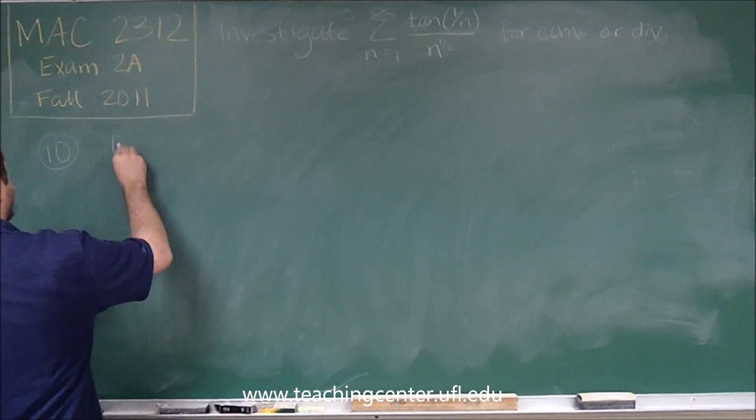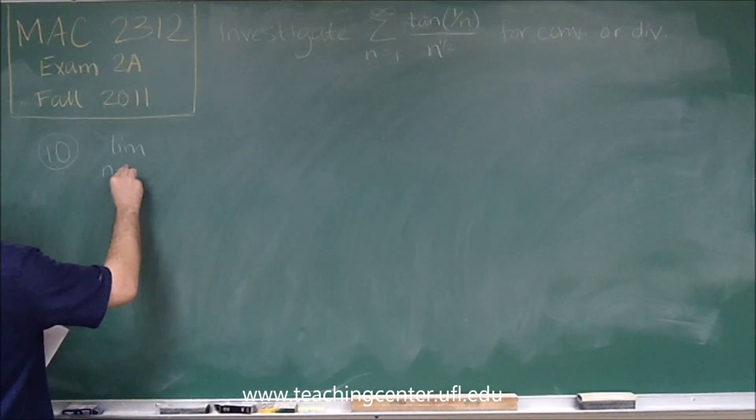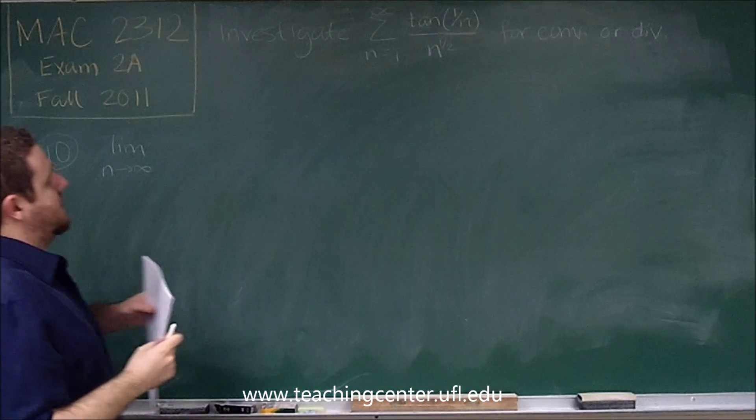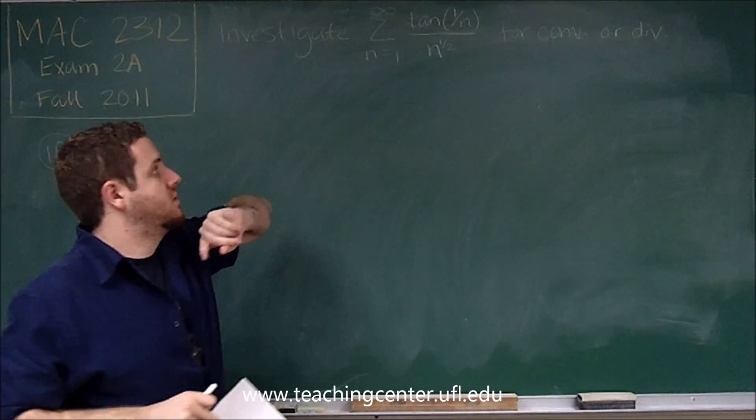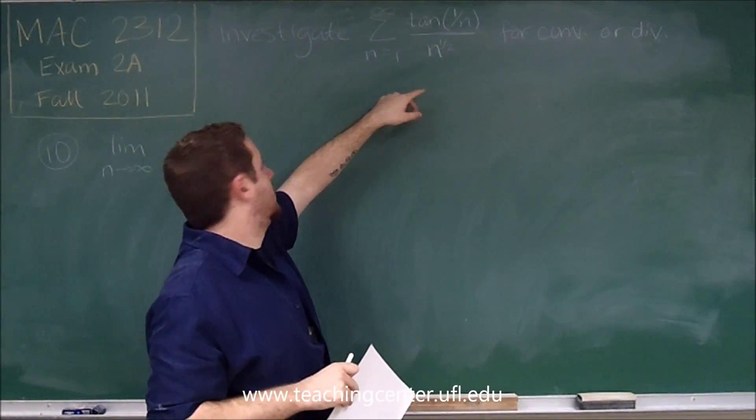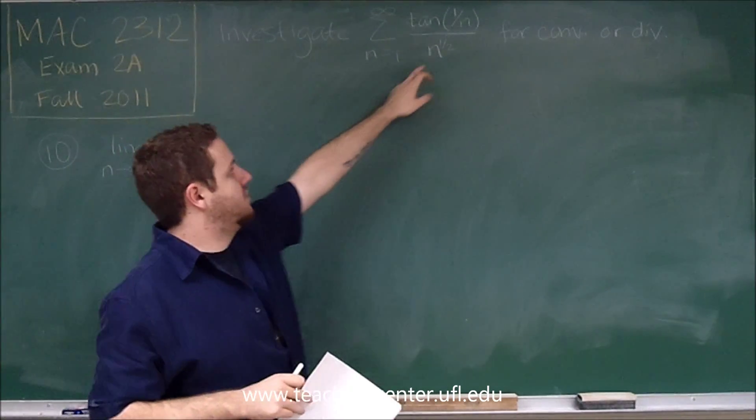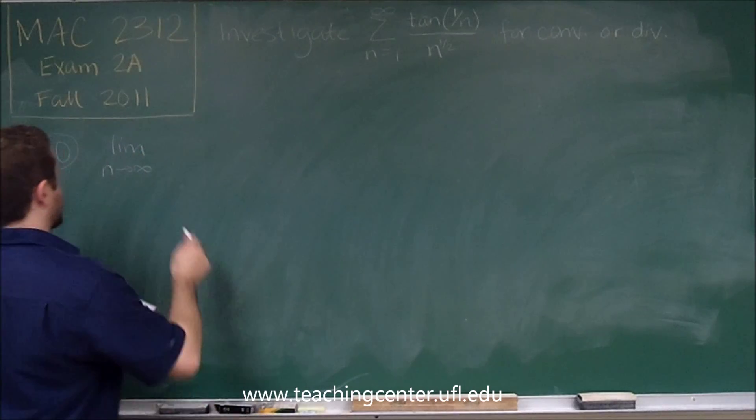Test for divergence says what happens when we take the limit as n goes to infinity. Well, as n goes to infinity, 1 over infinity becomes 0. Tangent of 0 is 0. On the denominator, we have infinity. 0 over infinity is clearly going to be 0.